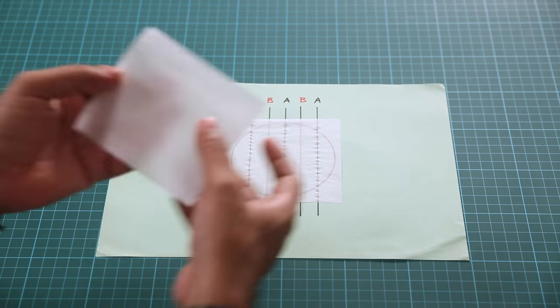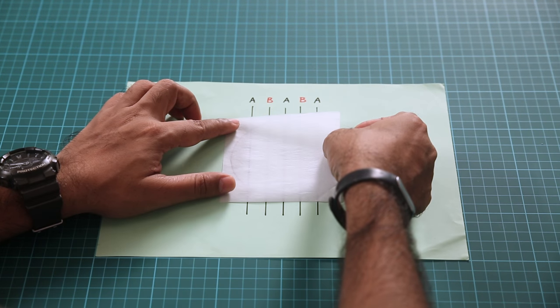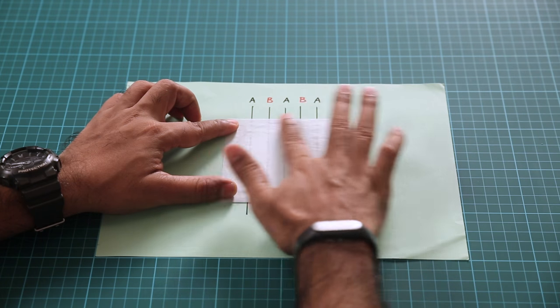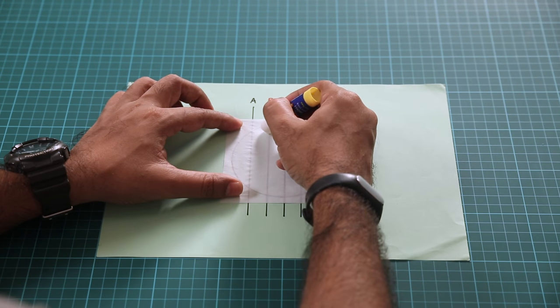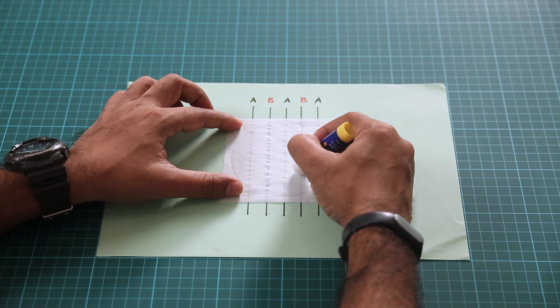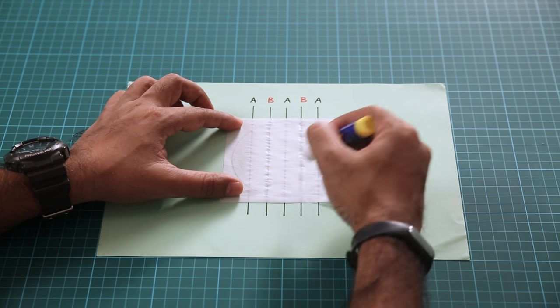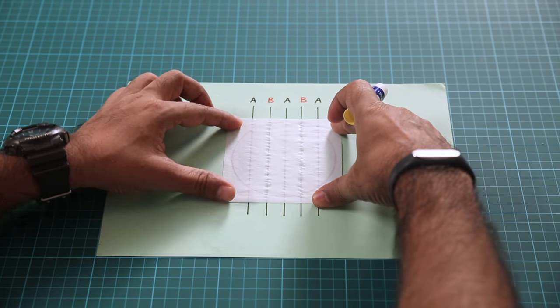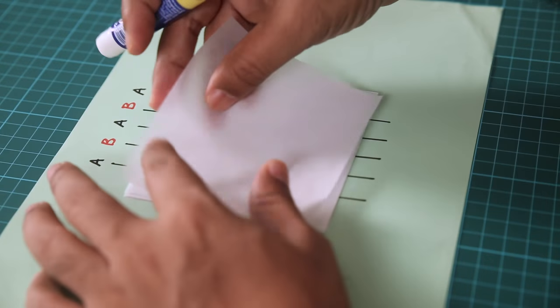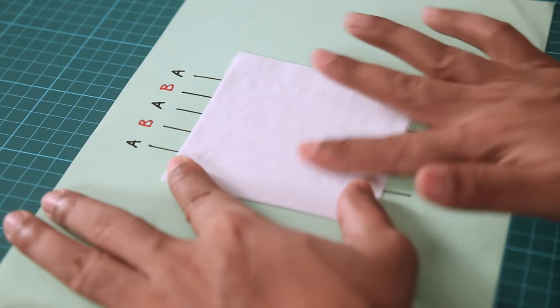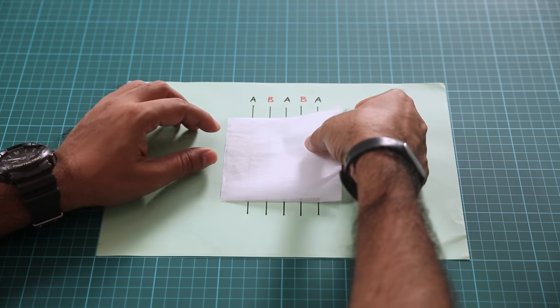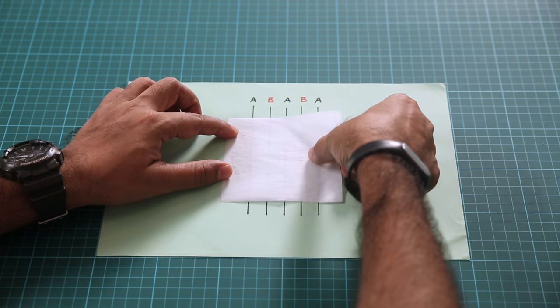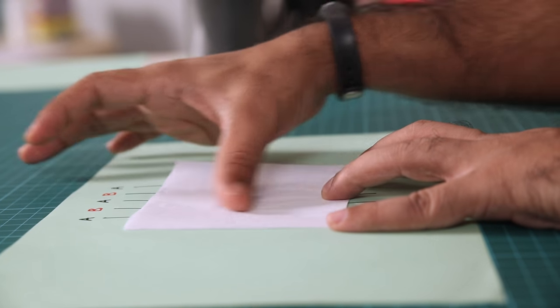Just like that. Now take another sheet, align it and stick it in place. Now we'll repeat the same process and apply glue on the lines that are marked B. And you can see because of the template, it becomes really easy. And you have to keep repeating the same process, alternating between A and B. And you have to stick about 20 sheets to get a nice hexagon pattern.